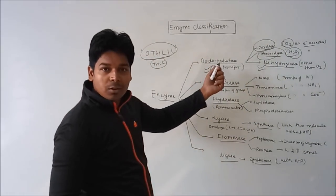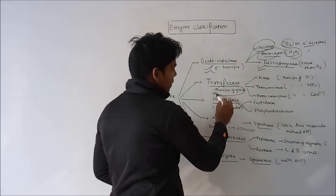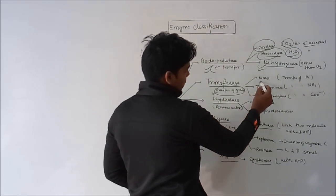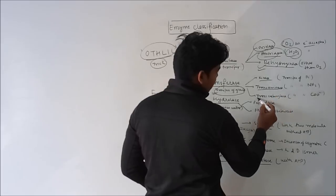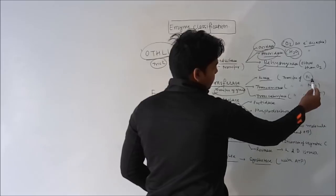In transferase, it is similar to oxidoreductase, but here is the transfer of any group, not an electron. Transferase is like kinase, transaminase, or transcarboxylase. In kinase, transfer of phosphate group.